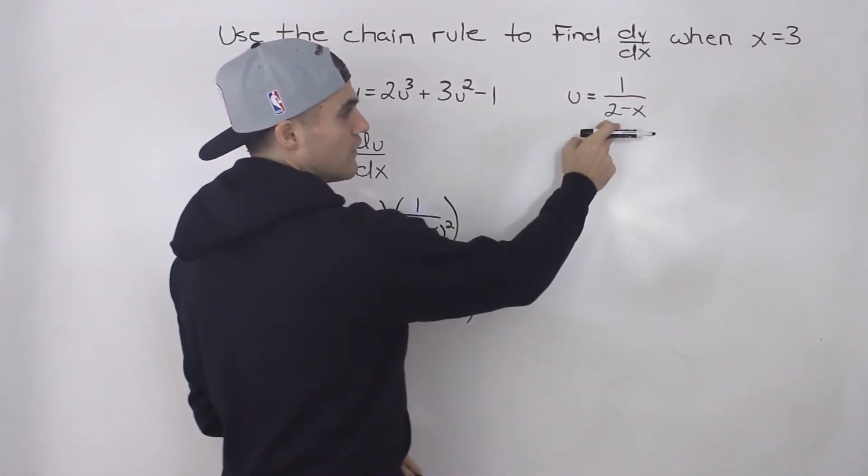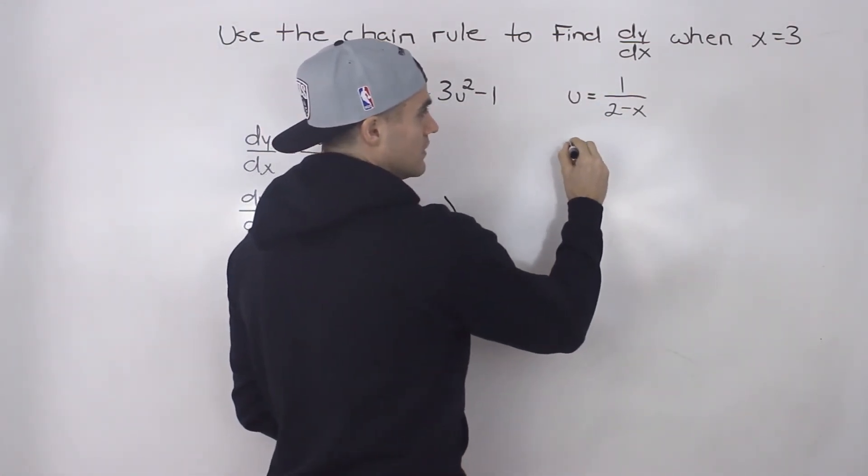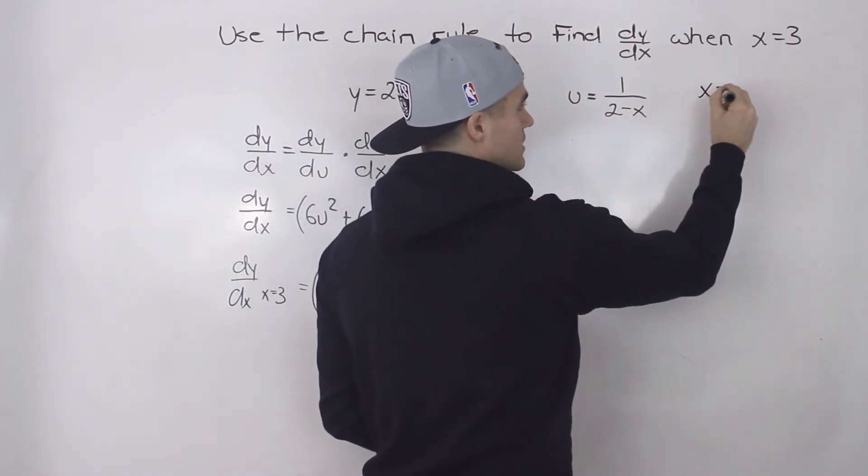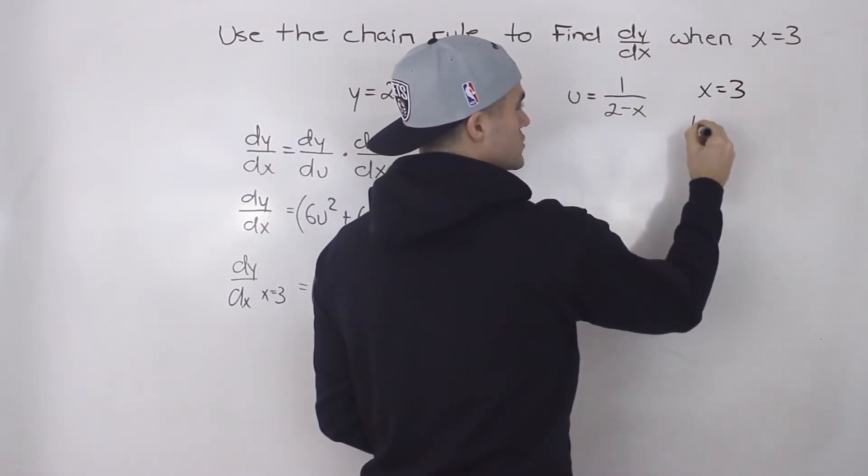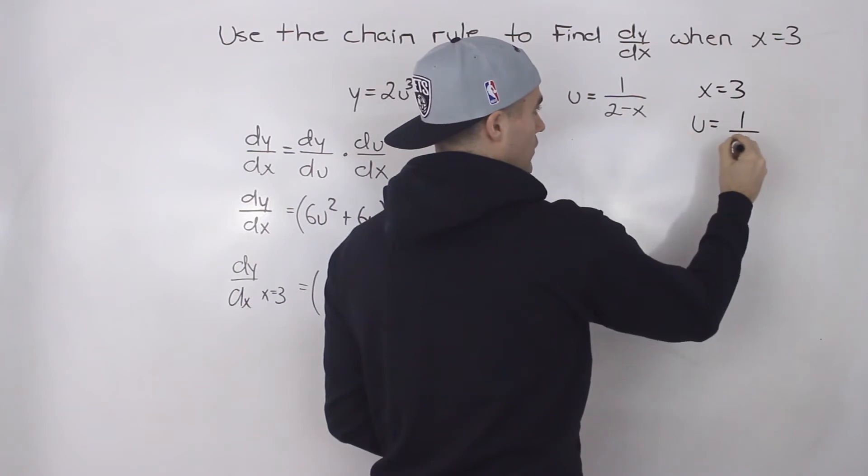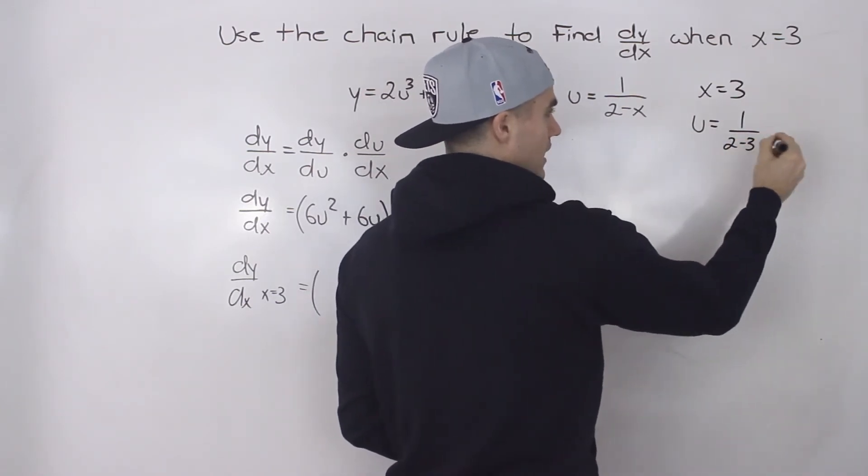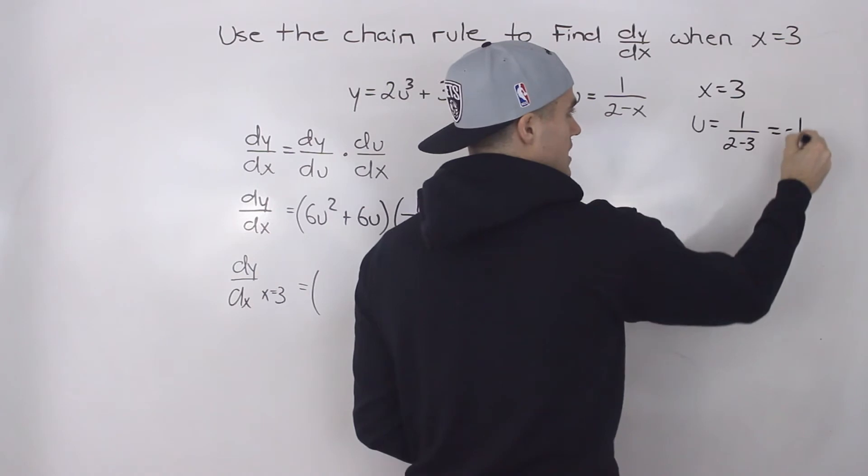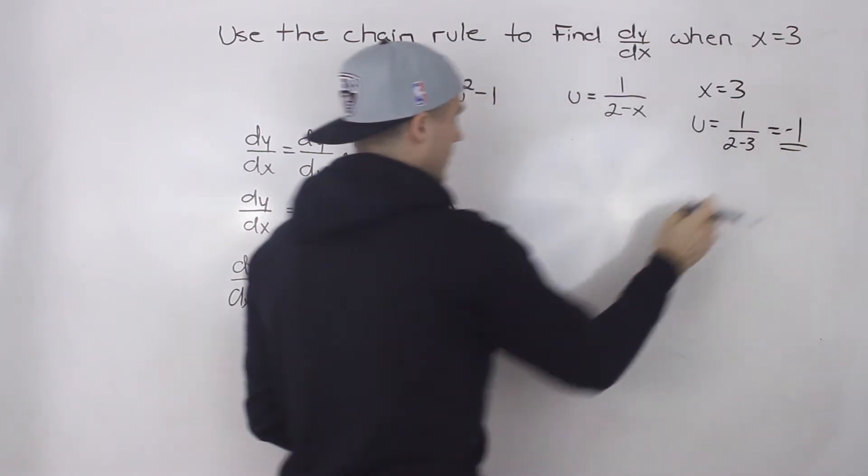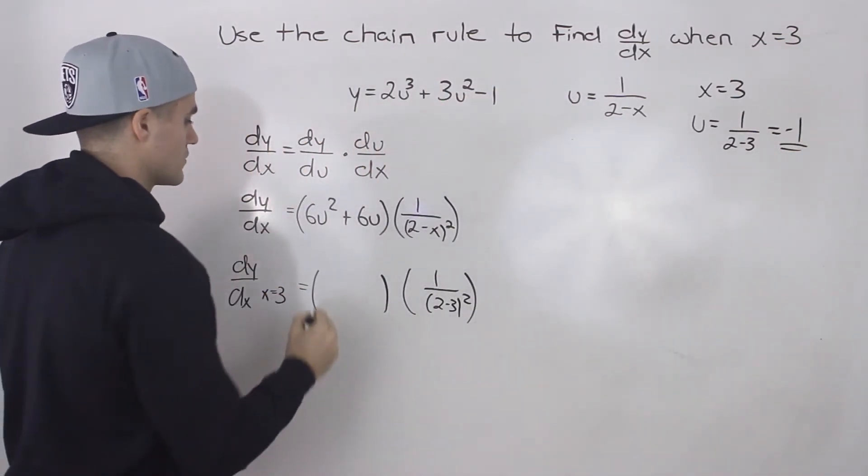So we would plug in a value of 3 for x here. So when x is equal to 3, that means u is equal to 1 over 2 minus 3. 2 minus 3 is negative 1. 1 over negative 1 is just negative 1. So we would plug in negative 1 for the u values here.